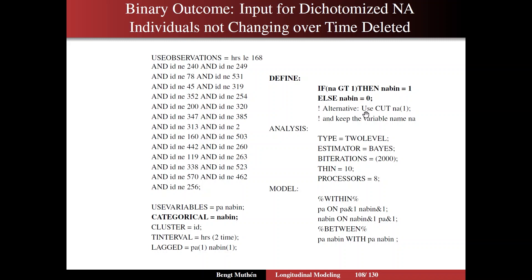An alternative is to use the cut function, cutting the variable at 1 and keeping the variable name NA, depending on how you want to proceed. I chose the bolded option. The analysis is the same, and the model is just extended a little bit. We do a cross-lag model: PA regressed on PA lagged 1 and the binary lagged 1 — that is, regressed on the Y-star behind the binary at the previous time point. Then we regress NABIN on its previous value (the autoregression) and the previous value for positive affect, and we correlate the random effects on the between level.